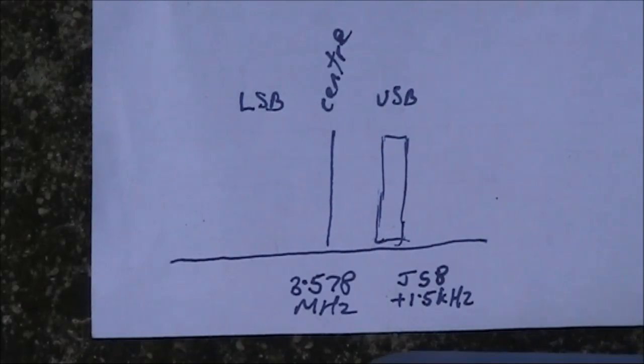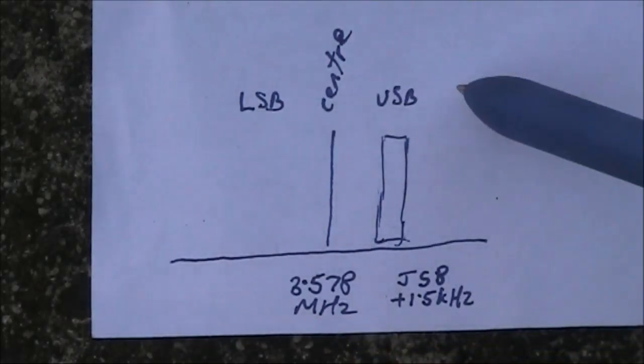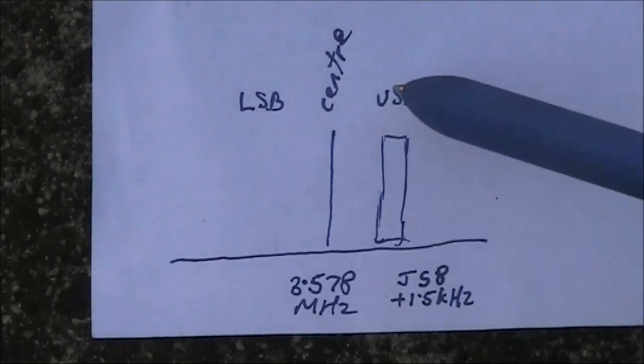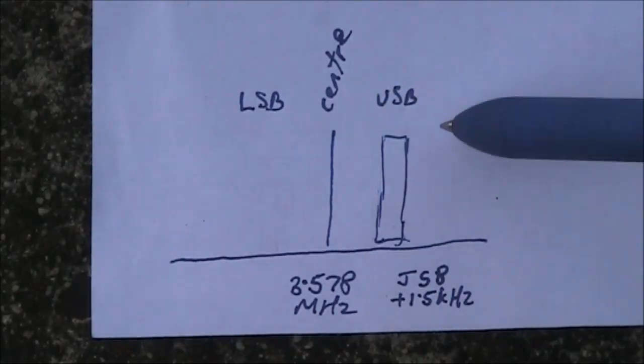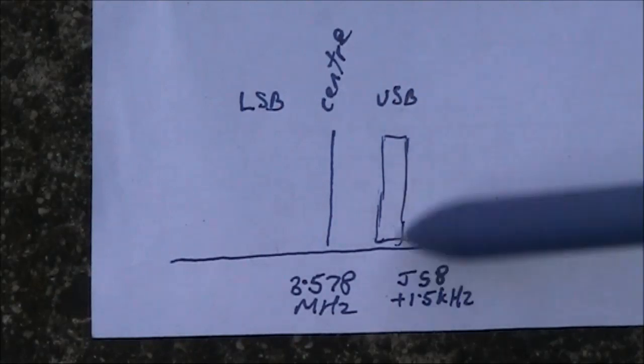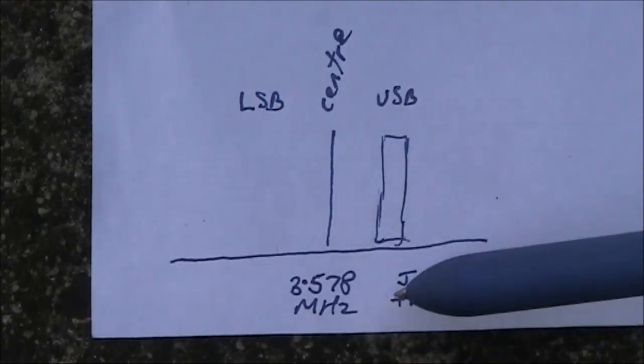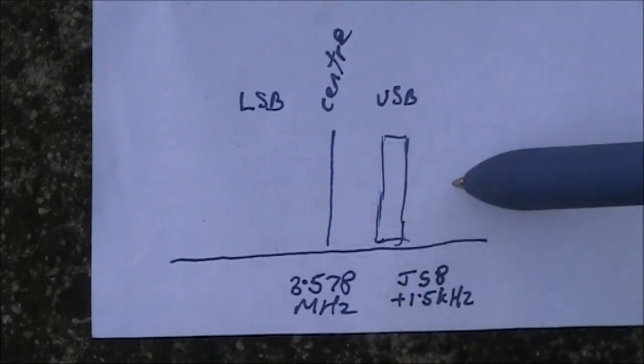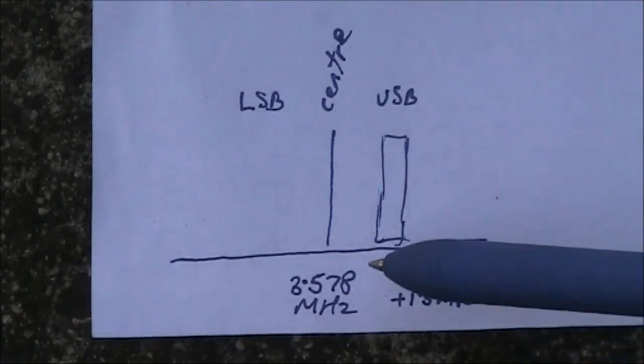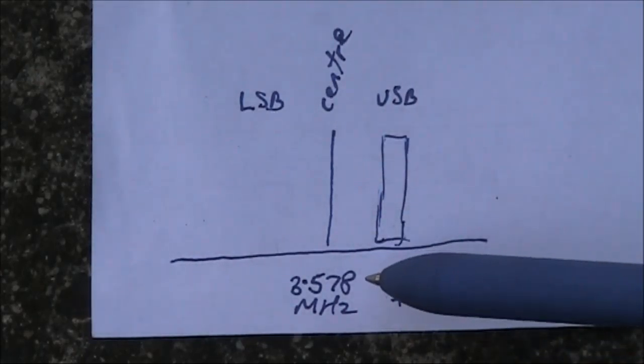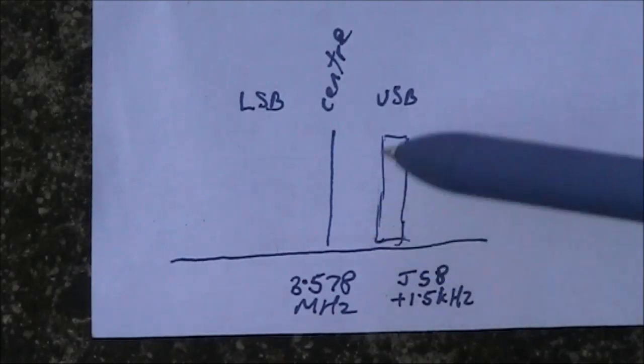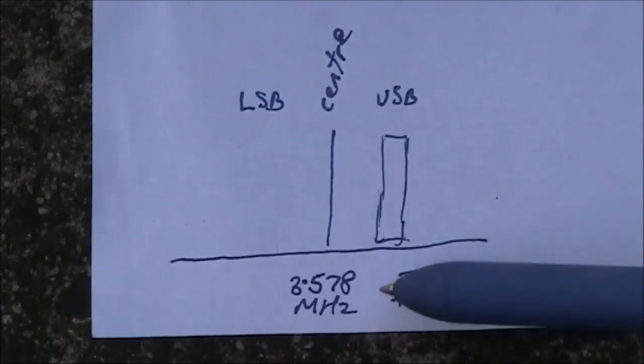It so happens that the 80 metre frequency for JS8 is 3.578, that's the dial frequency. And you set your equipment to upper sideband, unlike if you're using SSB for voice contacts. The outcome of that is that your transmitted signal is above the dial frequency by about one or two kilohertz. That 3.578 megahertz frequency is important, as it makes construction of this receiver much simpler than otherwise.